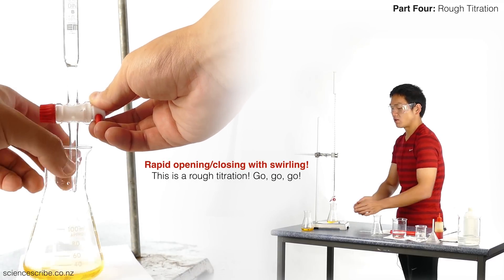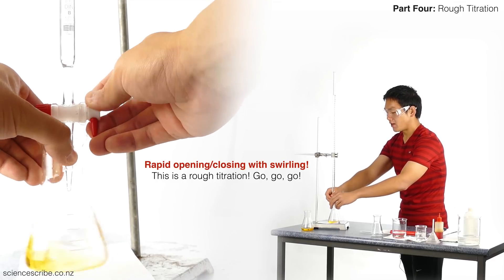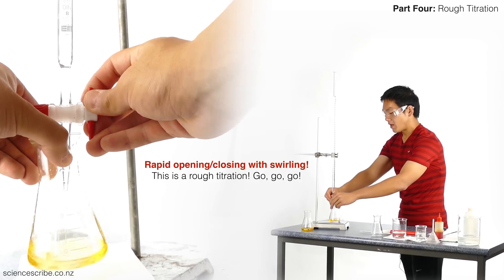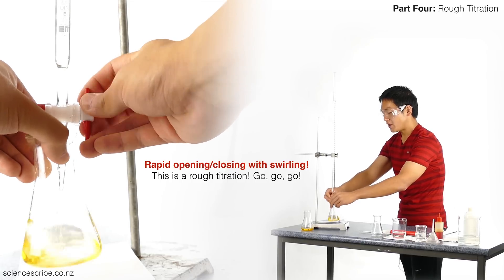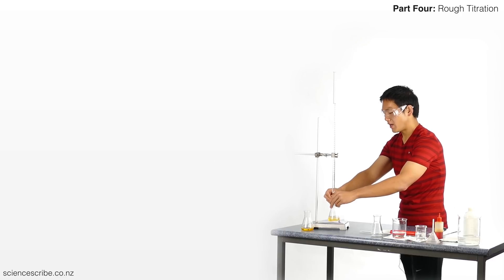So since this is a rough titration, we're going to go for quick drains. And we're going to go for quick swirls as well. This is also a really good chance for you to just practice and get that muscle memory back in your arm for your titration as well.